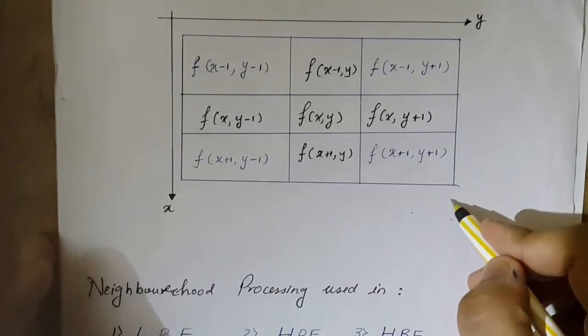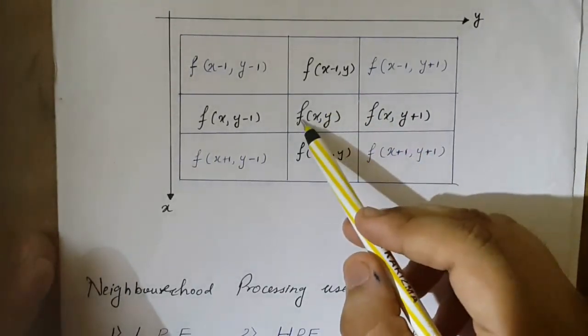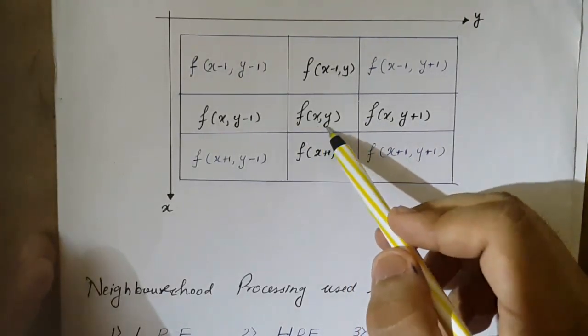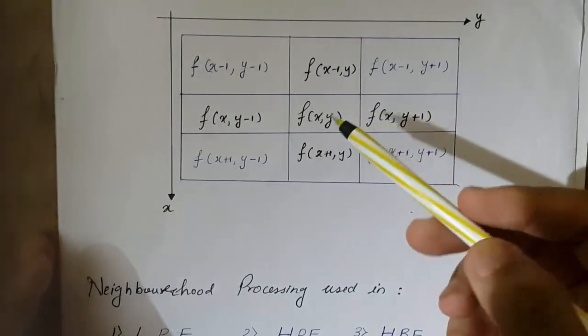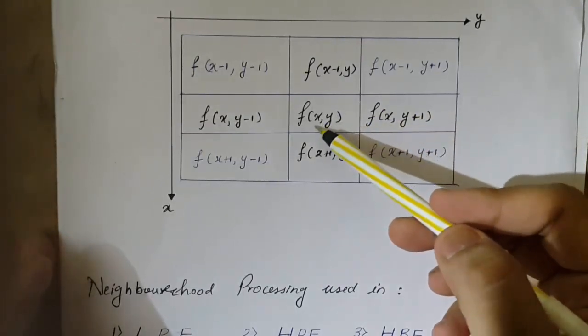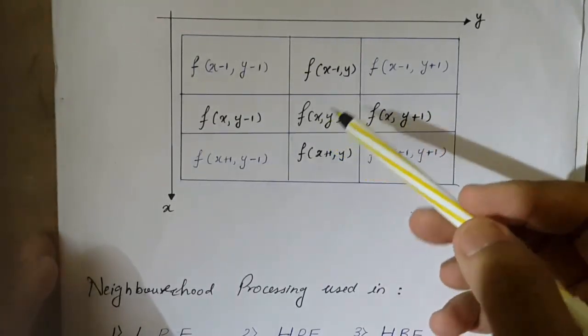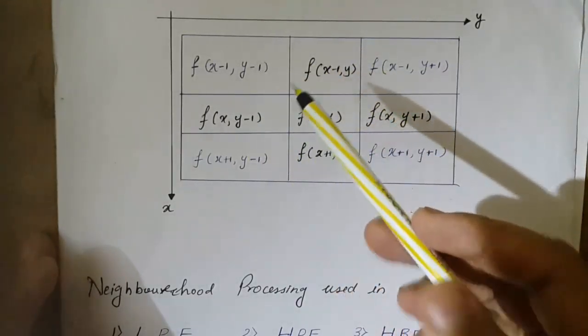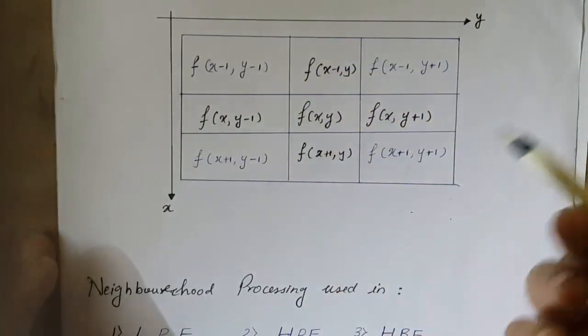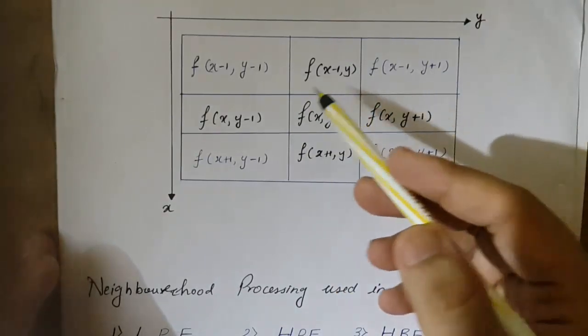This f is my pixel of interest. When I process or want to change the value of this pixel, I will consider all these surrounding pixels too. That's called neighborhood processing.